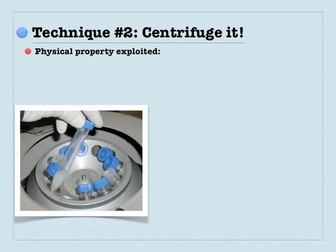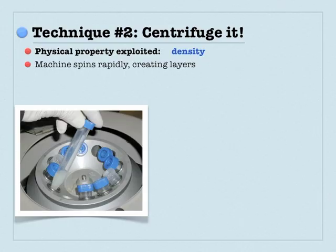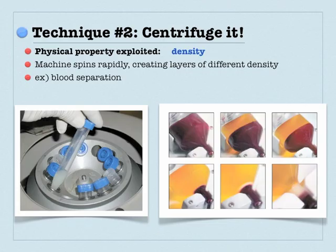You could use a centrifuge. A centrifuge mainly exploits density — you spin it around rapidly and then you'll create layers based on density. Blood separation is a great example of this. When you donate blood, they can put it under centrifugation and it's going to separate into the plasma, the platelets, and the red blood cells, each of which can serve different purposes. You'll see it being removed at the bottom of the tube.